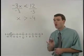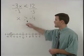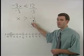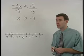The reason we use an open dot at negative 4 is that x is greater than negative 4 but it is not equal to negative 4.